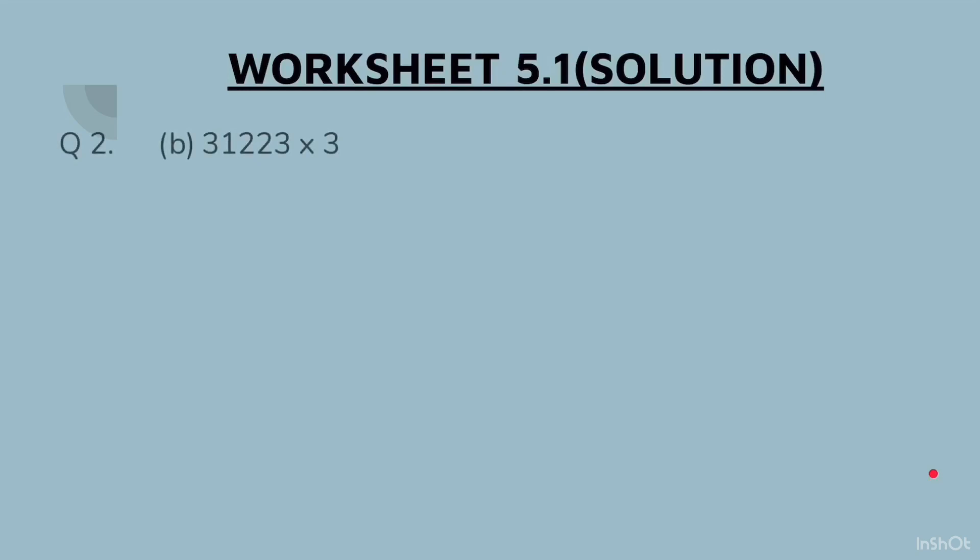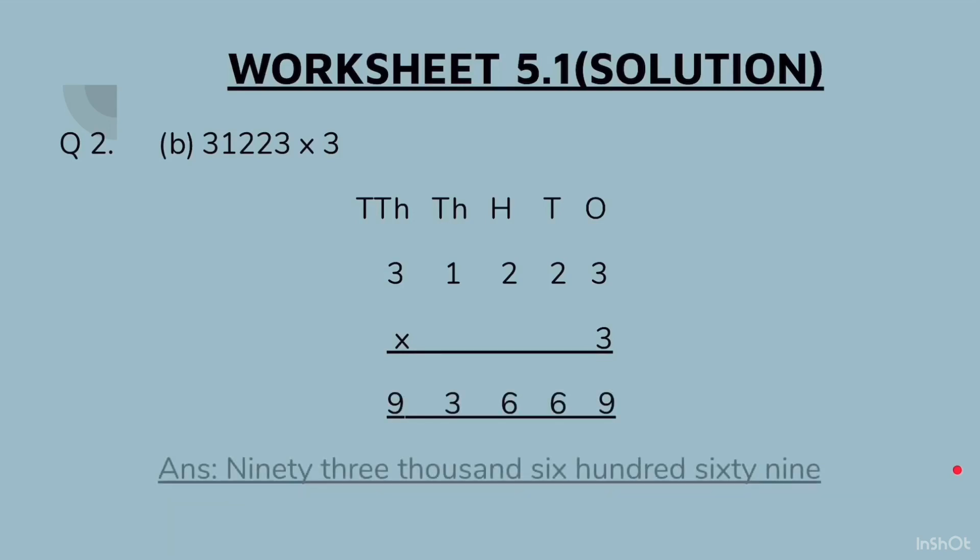B part: 31223 × 3. When you multiply this, you get the answer as 93,669. When you write it in words, it will be 93,669.